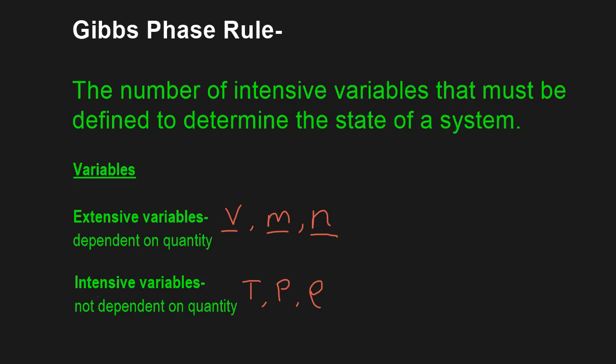It doesn't matter how much of the stuff I have — its temperature, pressure, and density are not dependent on how much. So that's an intensive variable. And the important thing here is that the Gibbs phase rule only works for intensive variables.